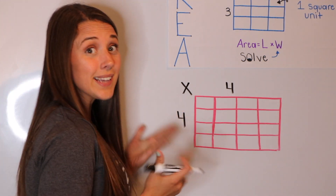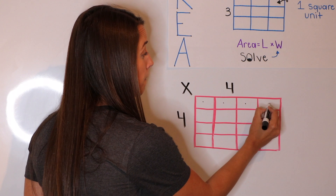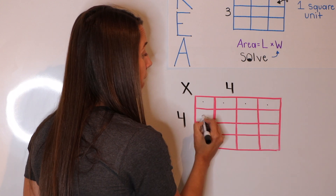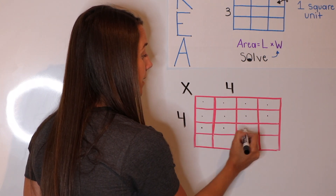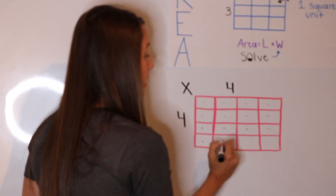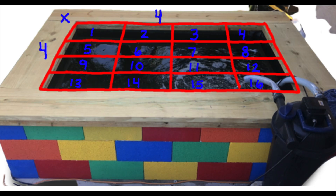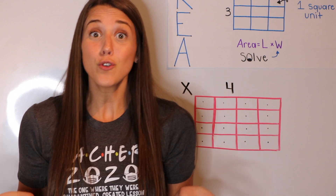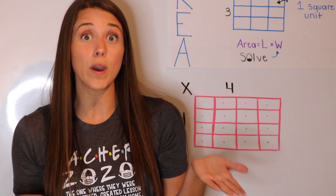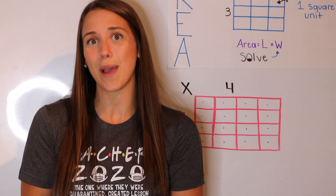Are you ready? Let's count them together: one, two, three, four, five, six, seven, eight, nine, ten, eleven, twelve, thirteen, fourteen, fifteen, sixteen. So the area of my Lego pond is 16 square units. You could do it two ways: you could multiply the length times the width, or you could simply just count the square units inside of your object.